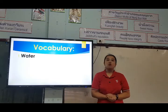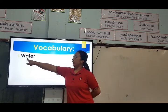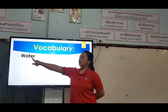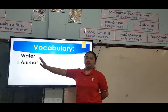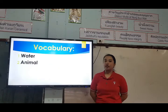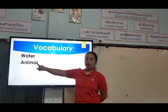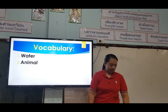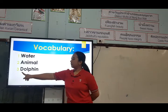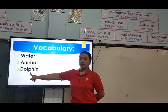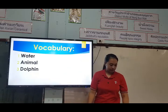The first one we have: water. Let's spell: W-A-T-E-R. Water. Number two, we have animal. Let's spell the word animal: A-N-I-M-A-L. Animal. Next, dolphin. D-O-L-P-H-I-N. Dolphin.